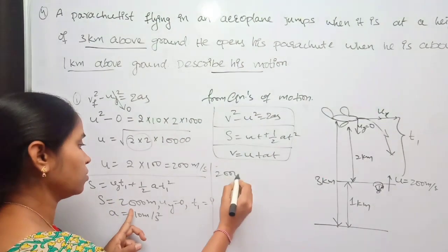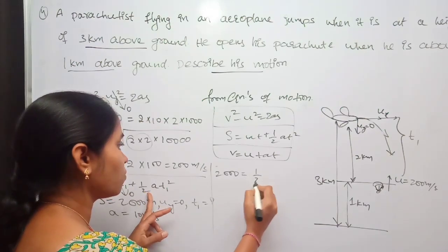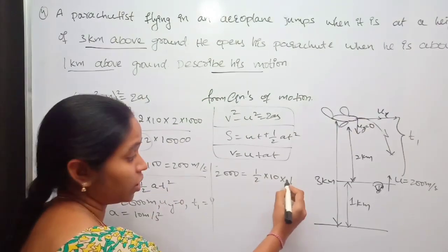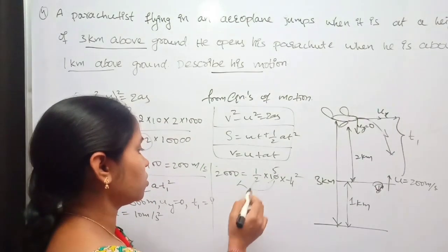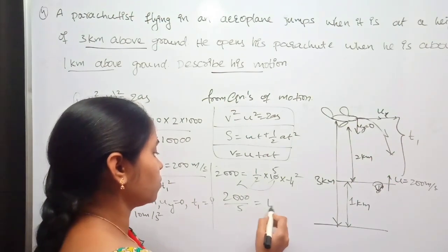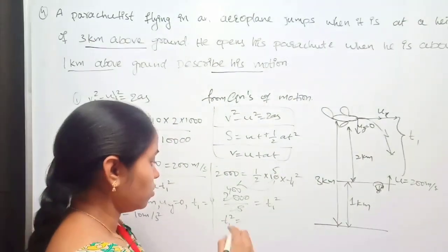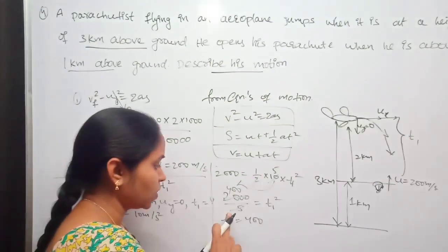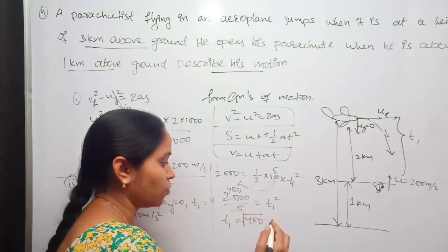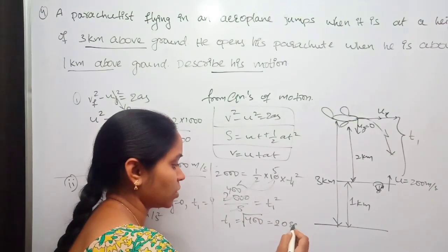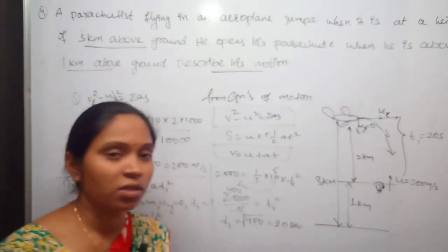So: 2000 = 0 × t1 + ½ × 10 × t1². The first term becomes zero since u = 0. This gives 2000 = 5t1², so t1² = 2000/5 = 400, therefore t1 = 20 seconds. The time taken by the parachutist to travel a distance of two kilometers is 20 seconds.